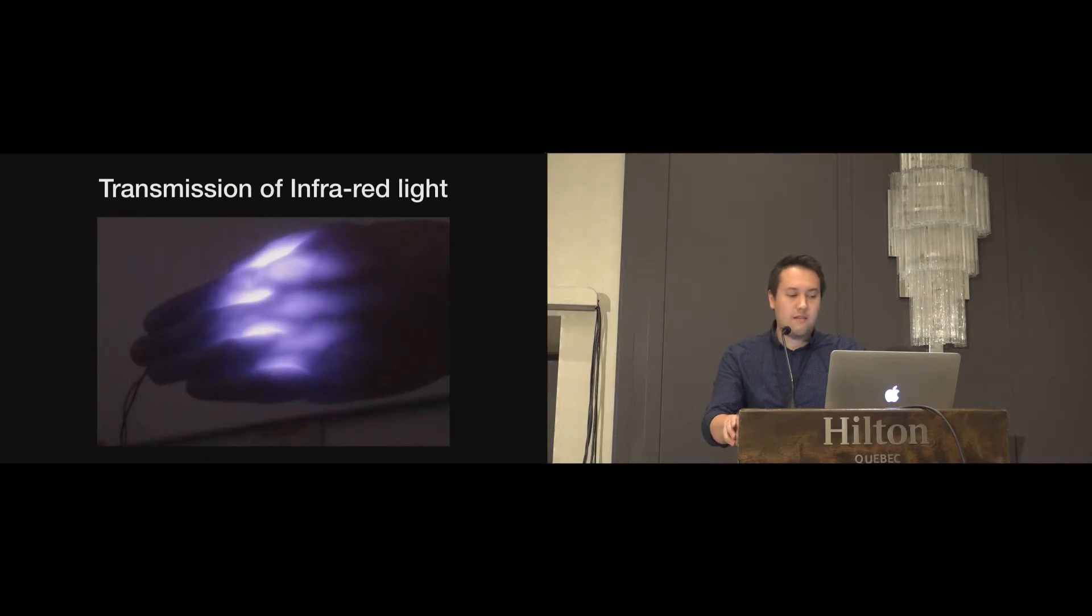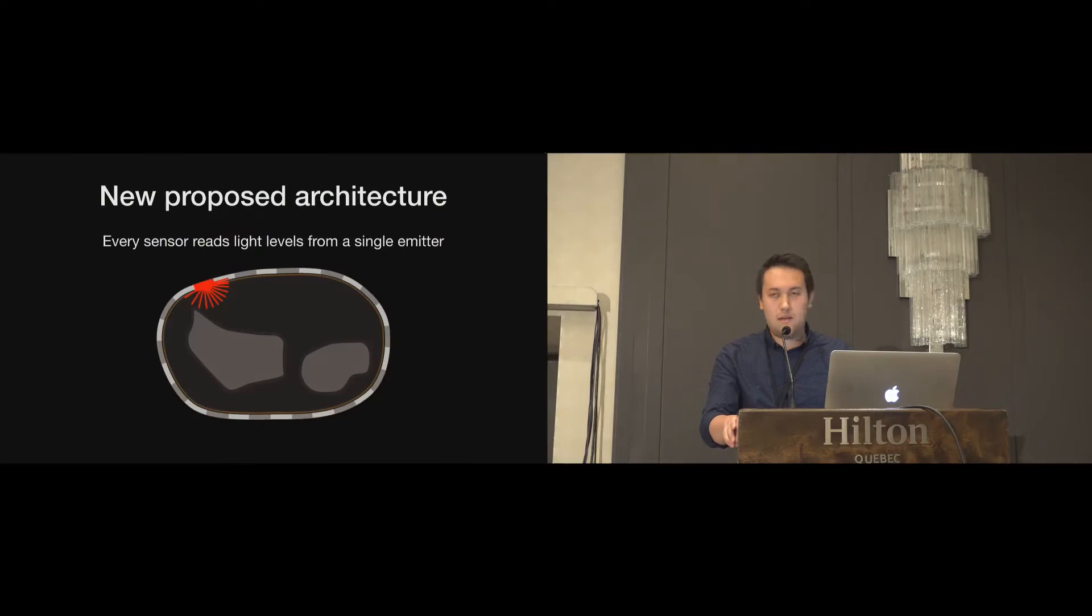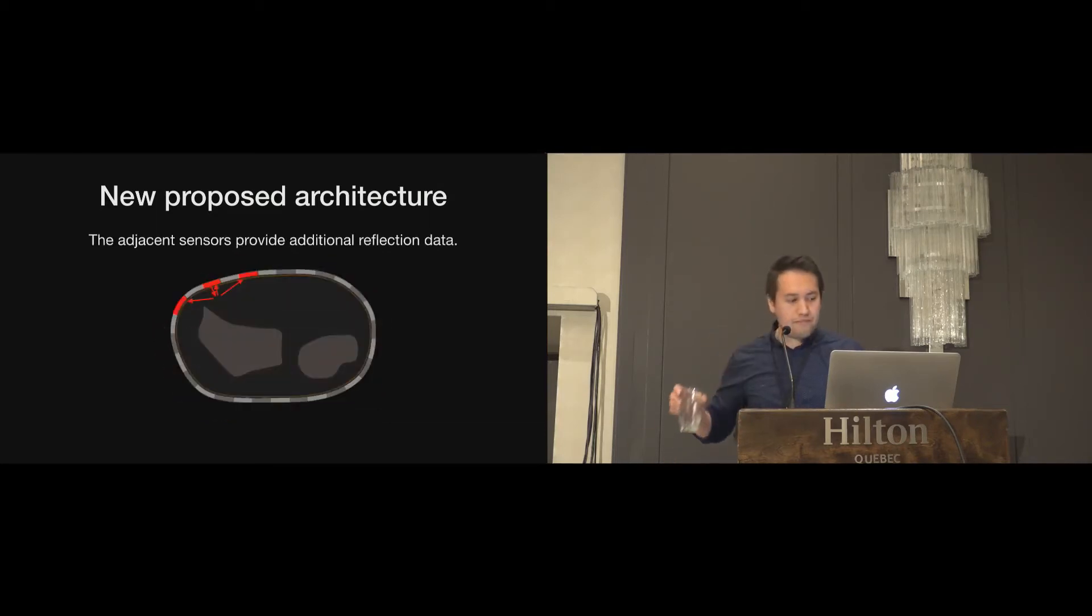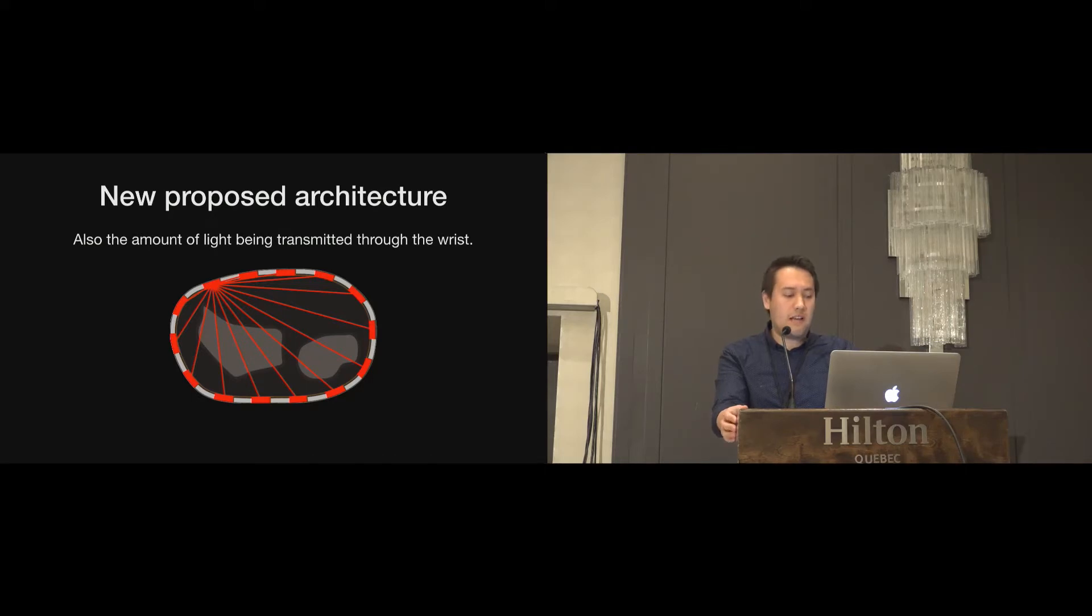But we know that infrared light of particular wavelengths can actually pass through flesh diffusely. So inspired by this, we made small changes to the previous configuration, where instead now every infrared sensor measures the light level when any one LED is emitting. Now in addition to what we had previously, the adjacent sensors also pick up reflections from the skin. And we also get some amount of light being transmitted through, which infers distance and possibly captures some of the morphological changes that happen within, such as bones moving.